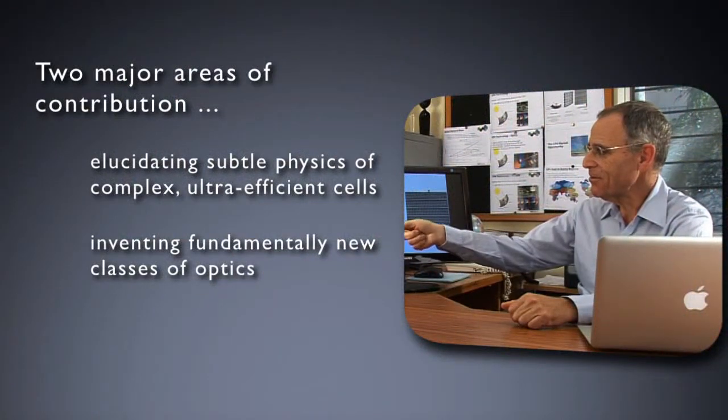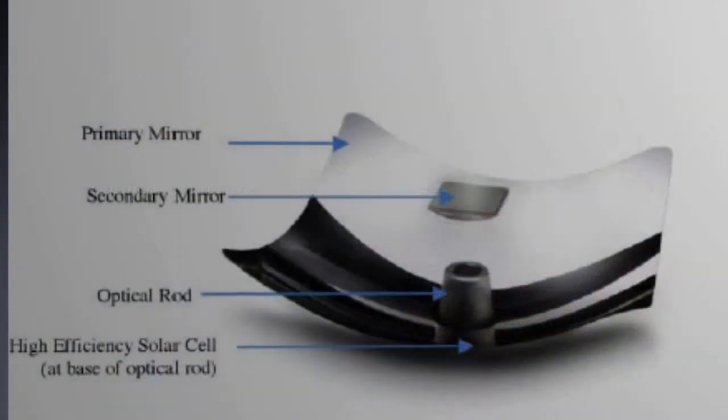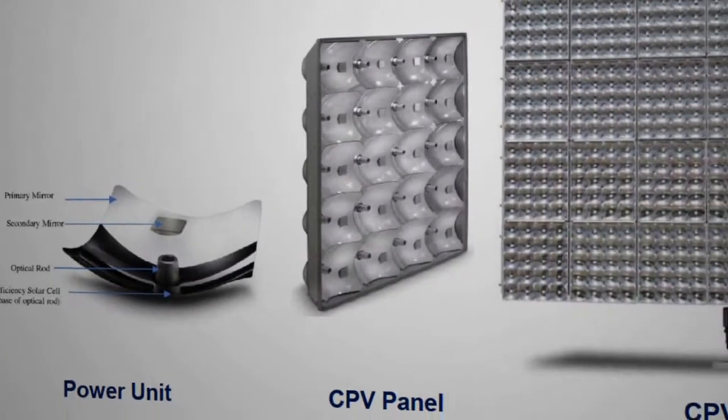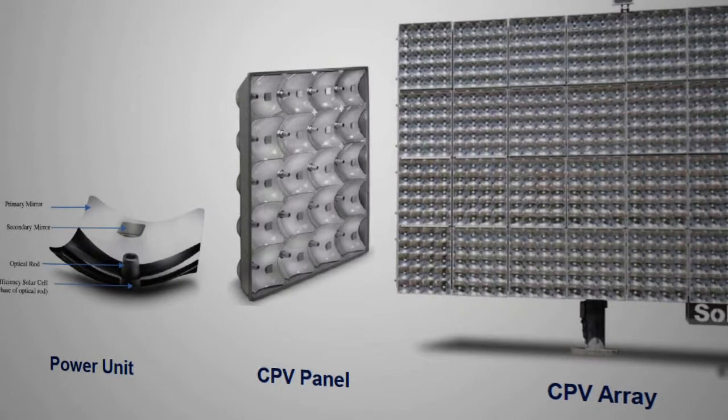And you see here from the tabletop 31-centimeter device to the module that's about one and a half by one meters to a nine kilowatt array, which now comprises the unit that produces massive electricity.